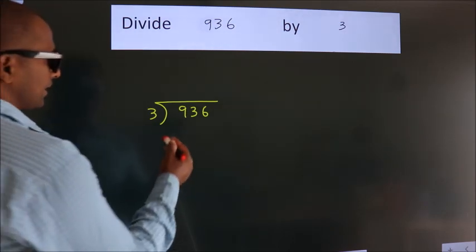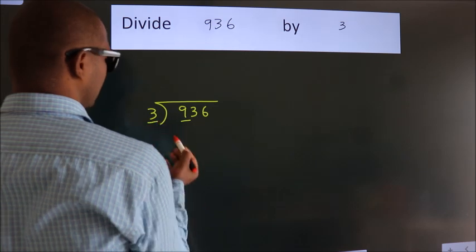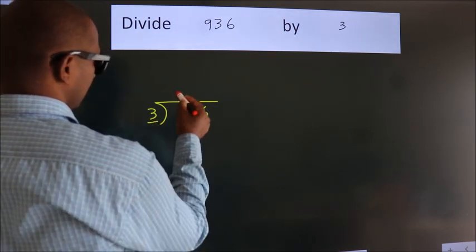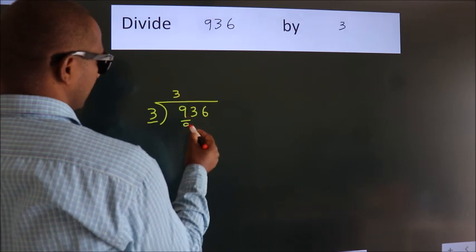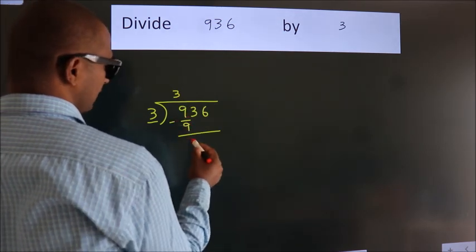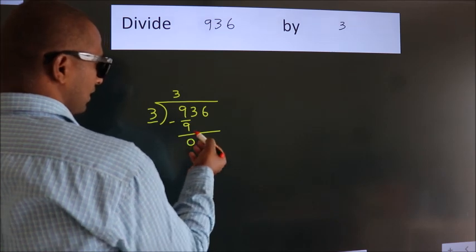Next, here we have 9, here 3. When do we get 9? In the 3 table, 3 threes are 9. Now we should subtract. We get 0.